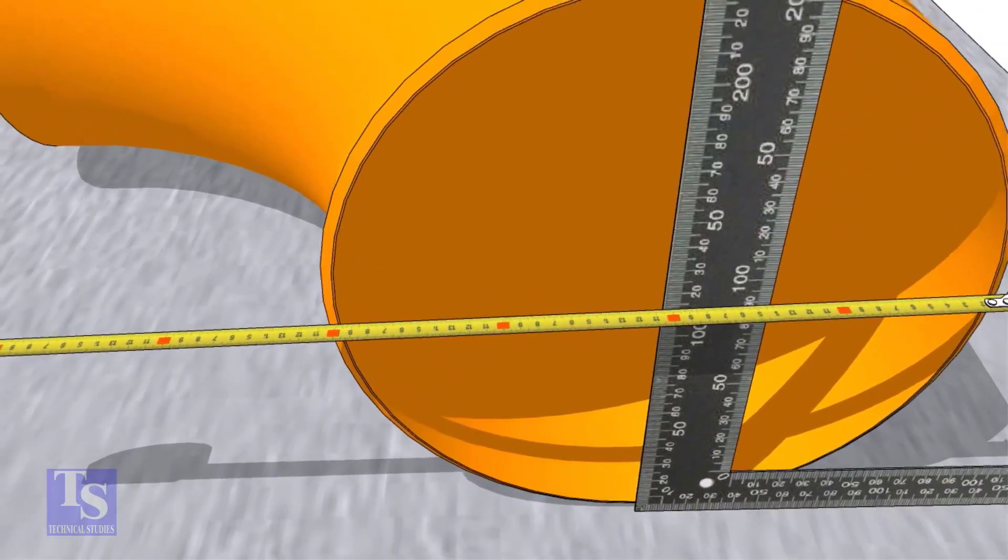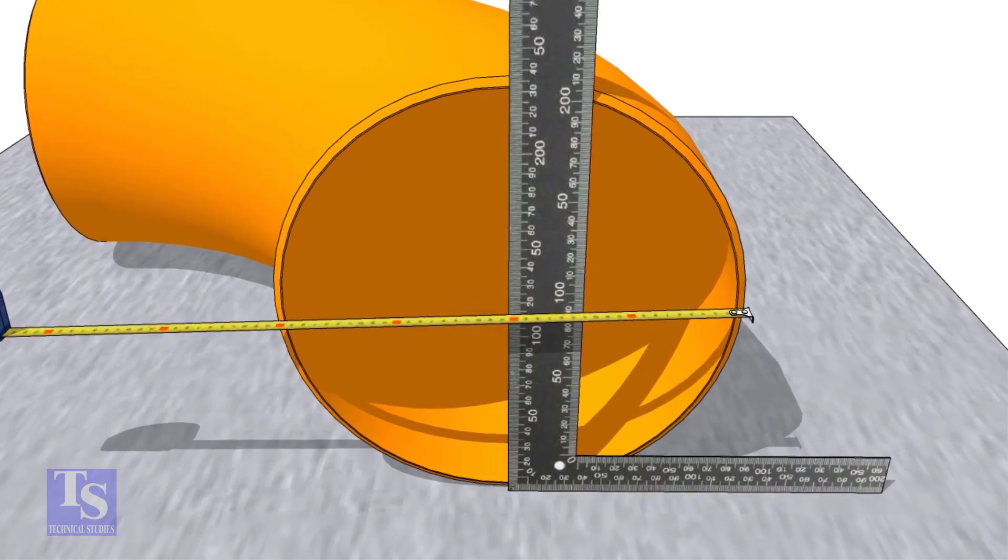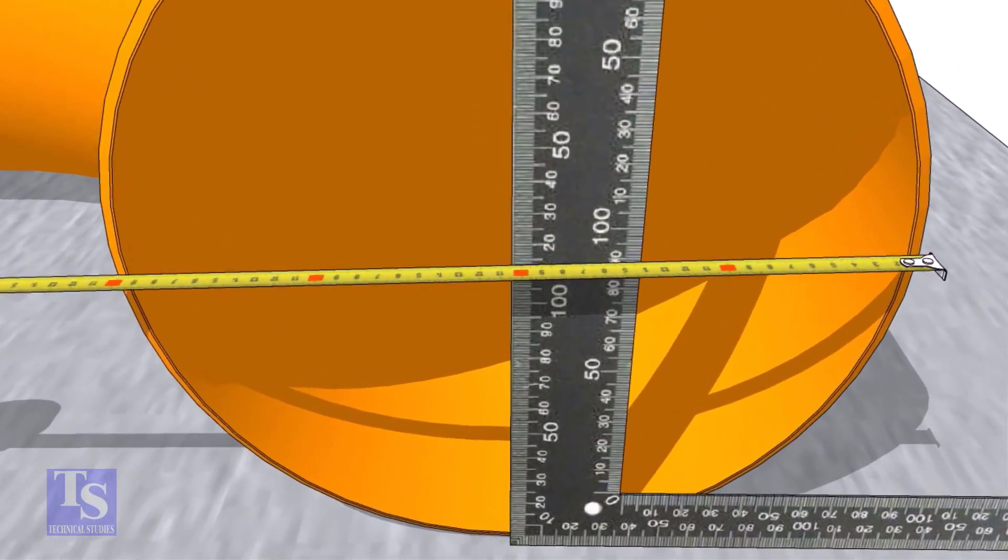Put a right angle at the center of the elbow. Make sure the distance from the edge of the elbow to the face of the right angle is equal.